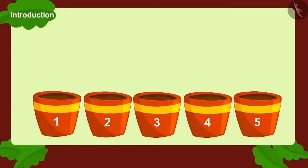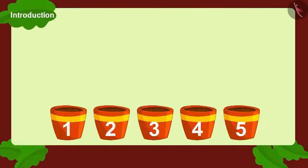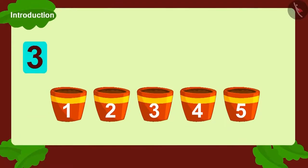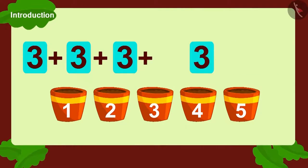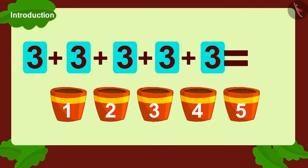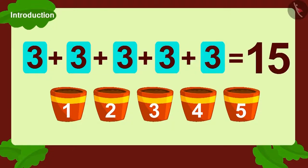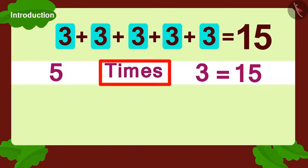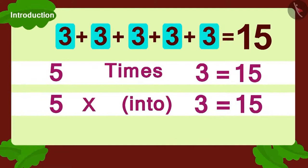Children, if Babban had planted three seeds each in five pots, then can you write this by using multiplication? Yes. We can write it as three plus three. Plus three. Plus three. And finally, one more three equals to 15. Or five multiplied by three. Or five multiplied with three. We can write it like this.